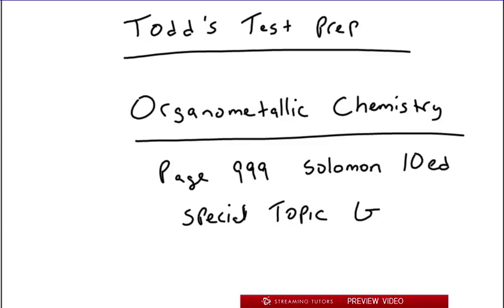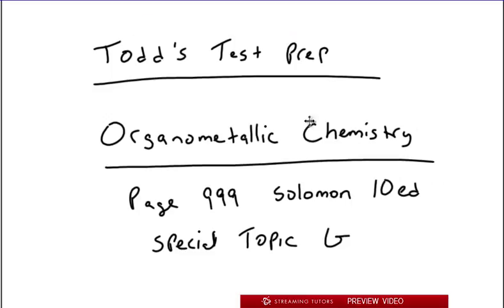Hey everybody, welcome back to Organic Chemistry. Now we're going to do organometallic chemistry. From your textbook, it starts on page 999, from the 10th edition of Solomon. But regardless, it's always the same. It's Special Topic G. So if you have an earlier edition of Solomon, just look for Special Topic G in the Table of Contents and you'll find it.